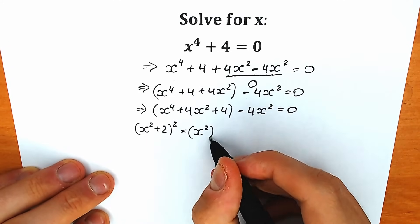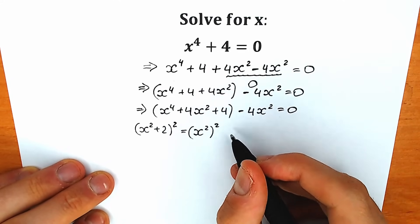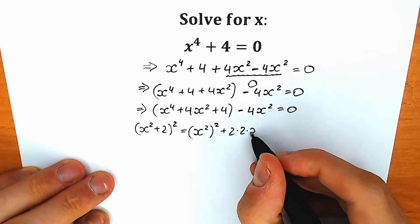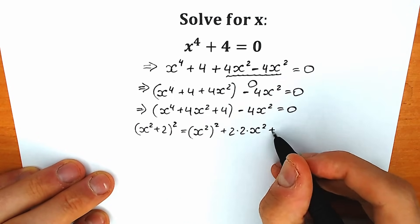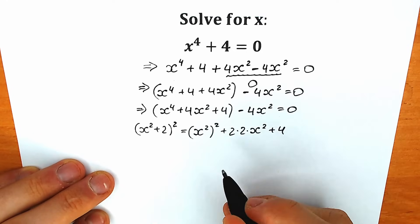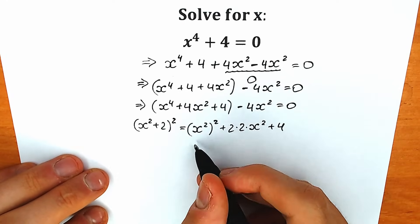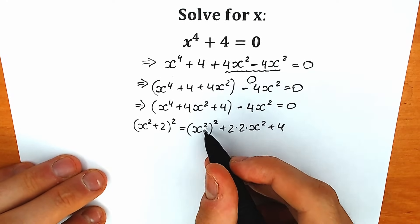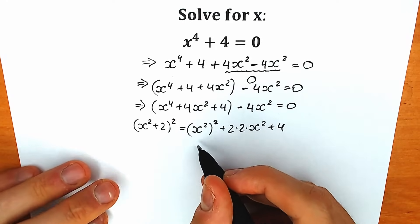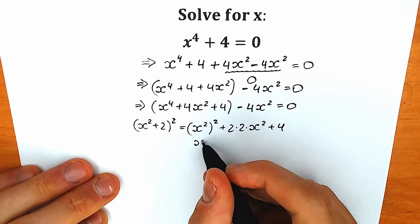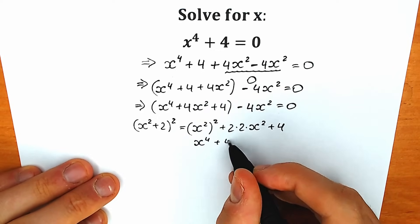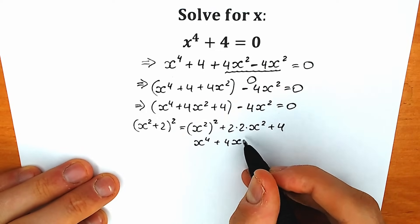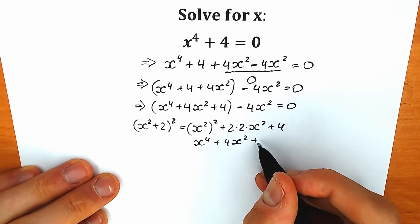Let's look closely at this formula. We have x to the fourth power plus 4x squared plus 4. If you raise x squared plus 2 to the second power, we will have exactly the same thing — x squared to the second power, plus 2 times 2 times x squared, plus 4, which simplifies to x to the fourth power plus 4x squared plus 4.